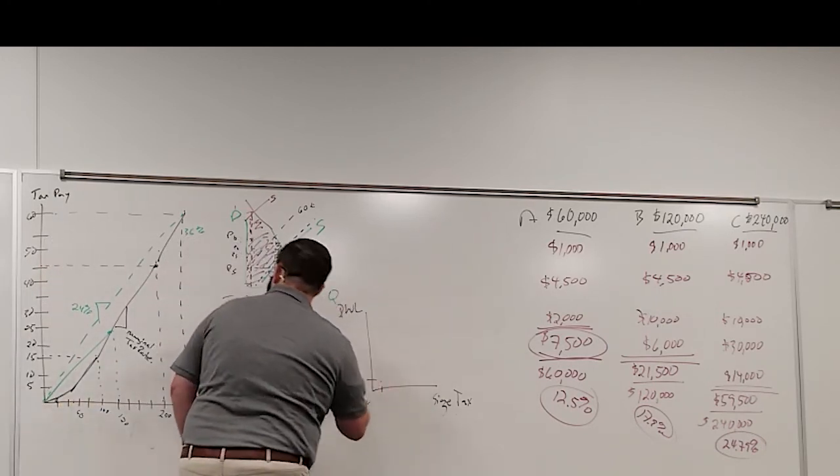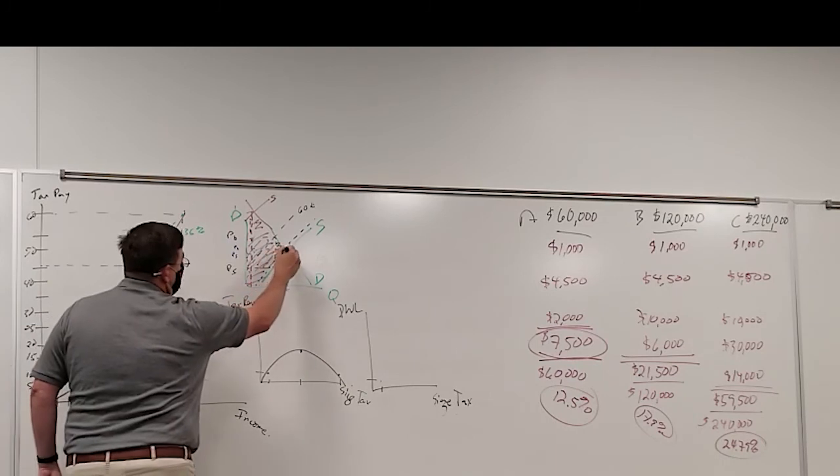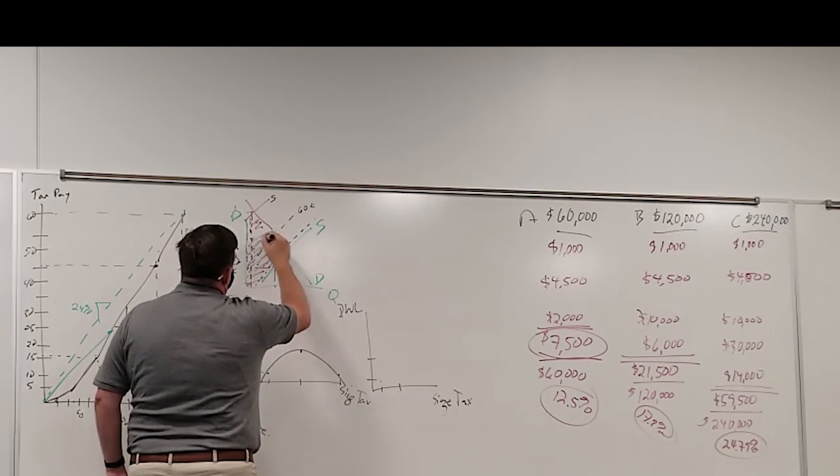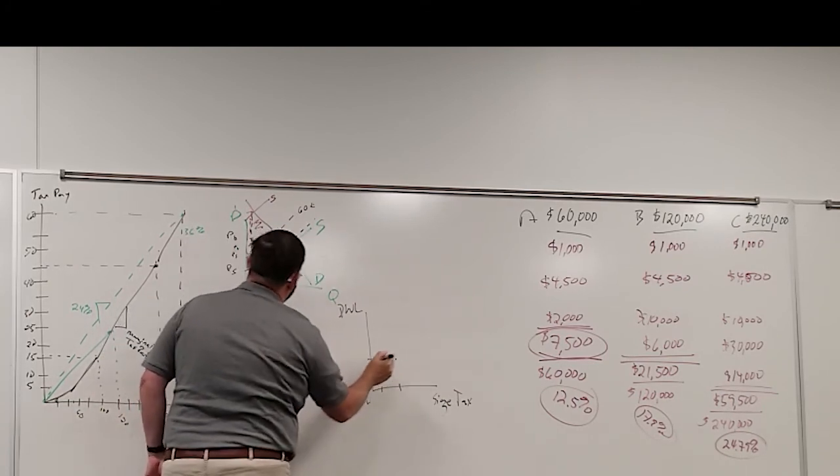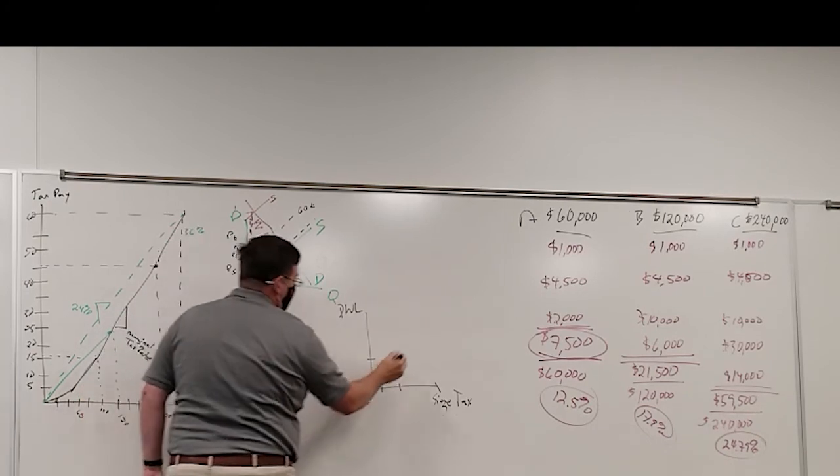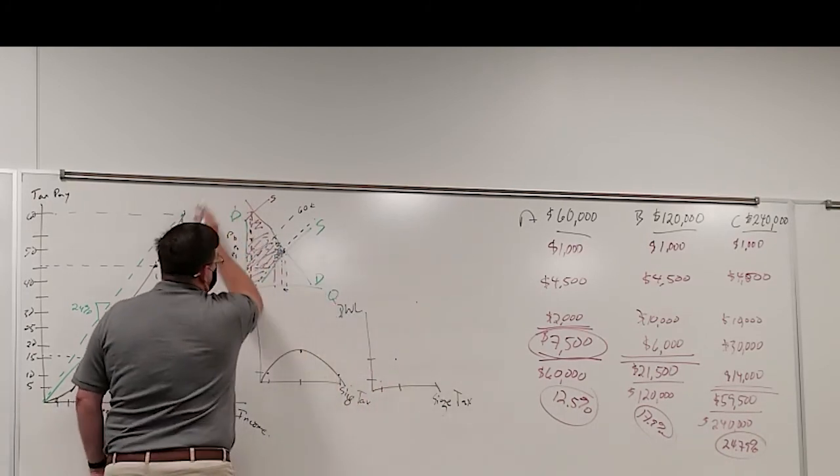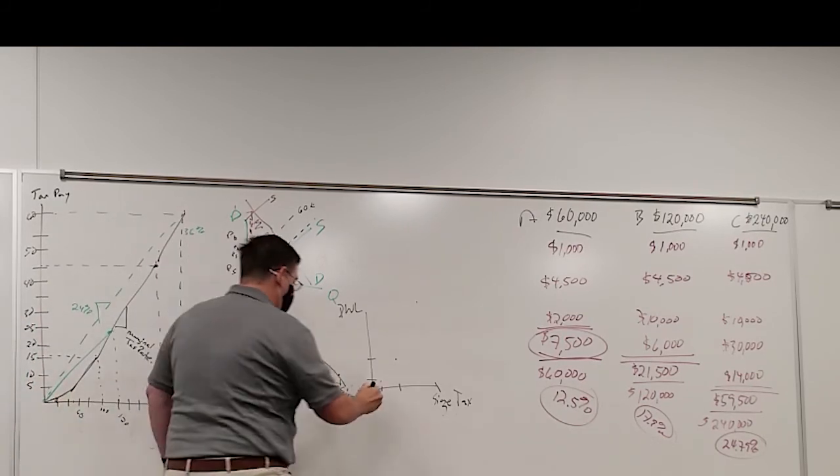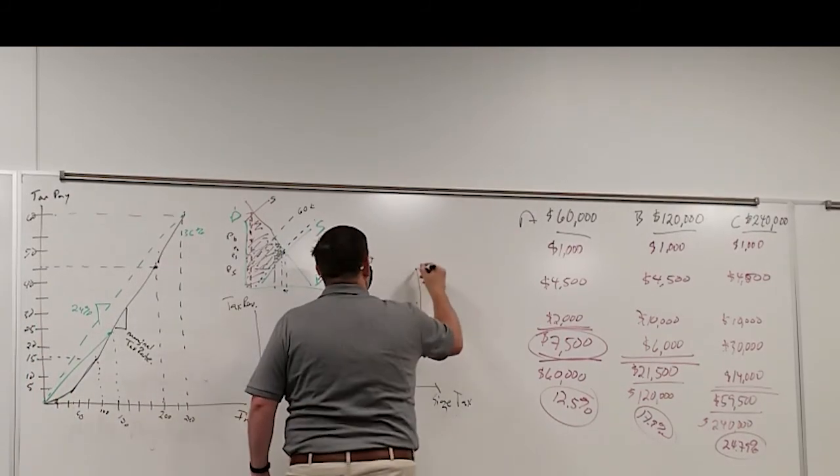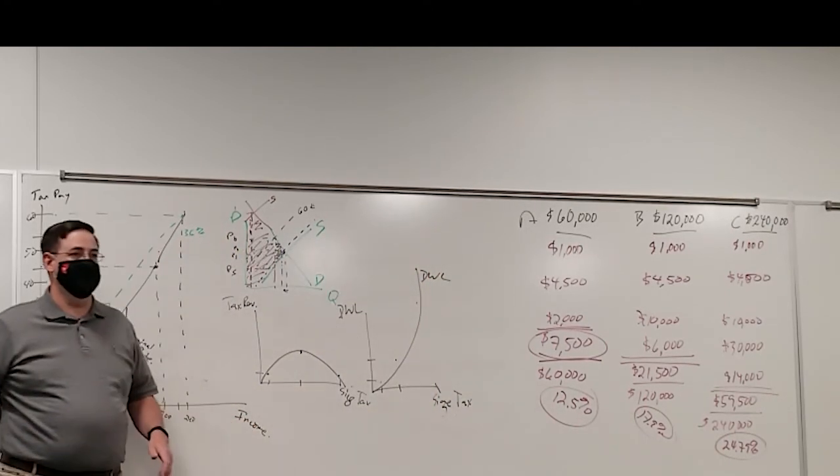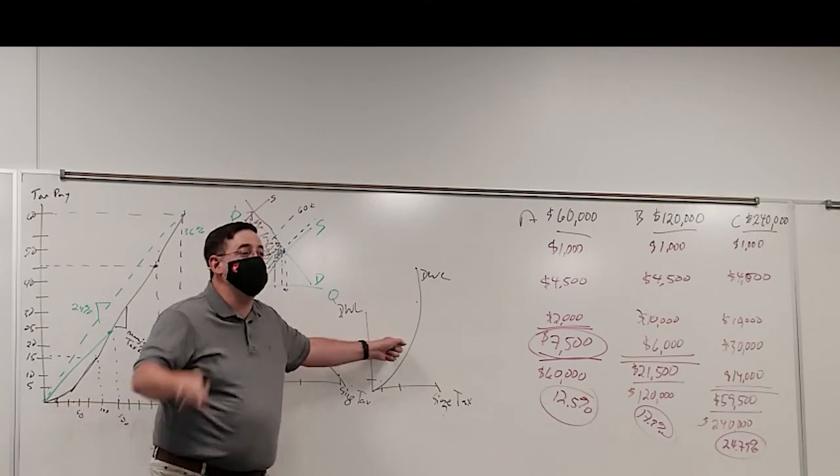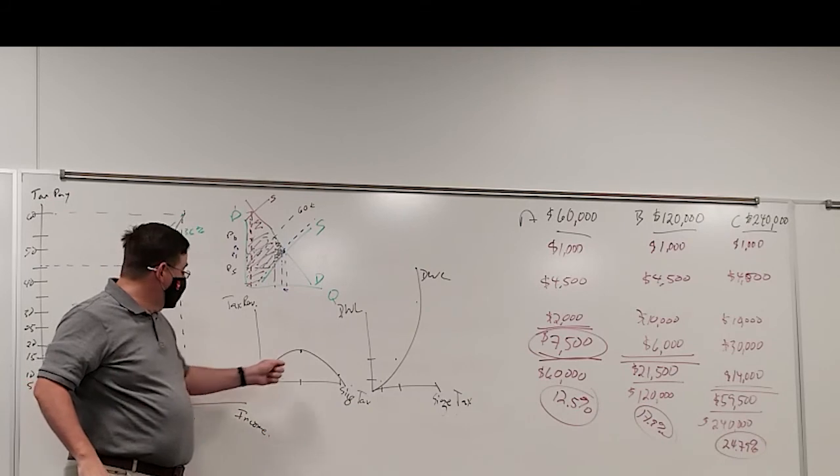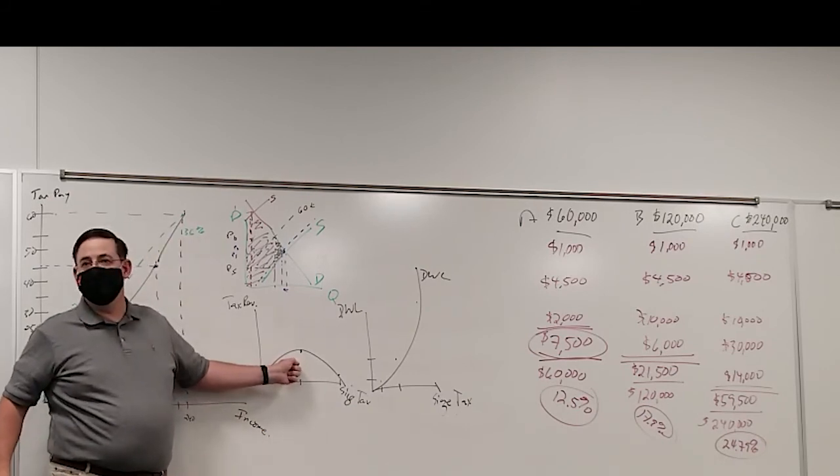What can we say about size tax and the deadweight loss that falls out of that tax? A small tax, a small deadweight loss. Bigger tax, bigger deadweight loss. Bigger tax, even bigger deadweight loss. And if we push it too far, the entire market collapses, which is an infinite amount of deadweight loss. This is the harm to us, the people, for raising the tax. This is the harm to the government from raising the tax.